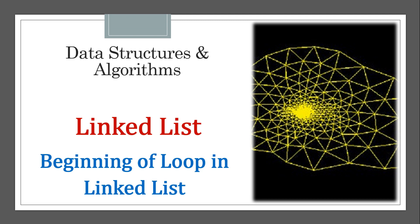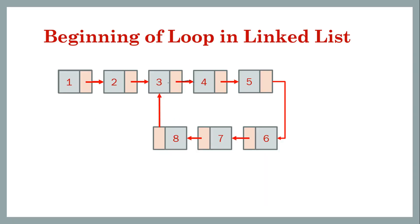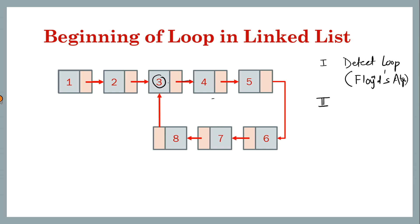In this lesson we will see another problem related to loops in a linked list. Here we have to find the first node in the loop. Earlier we used Floyd's algorithm to find a loop in the linked list; here we have to return node 3 if a loop exists, and null if it does not. This will be done in two steps: first, detect the loop using Floyd's algorithm — this part is common to the earlier problem — and second, find the first node.